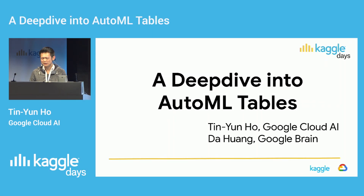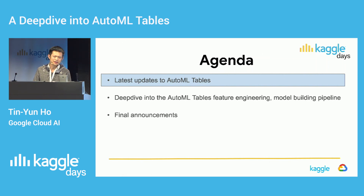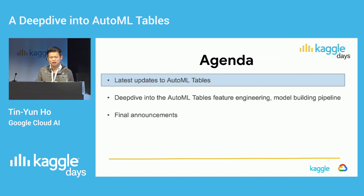Hey everyone, thanks for coming. Today I'll do a deep dive into AutoML Tables, which was recently announced at Google Next in San Francisco in April. I'll go over what the product is, as well as some latest updates and additional features we've launched. Then Dahl will go over details of our model and feature engineering, which will be very useful for those of you competing in Kaggle competitions. And then I'll make some final announcements at the end.